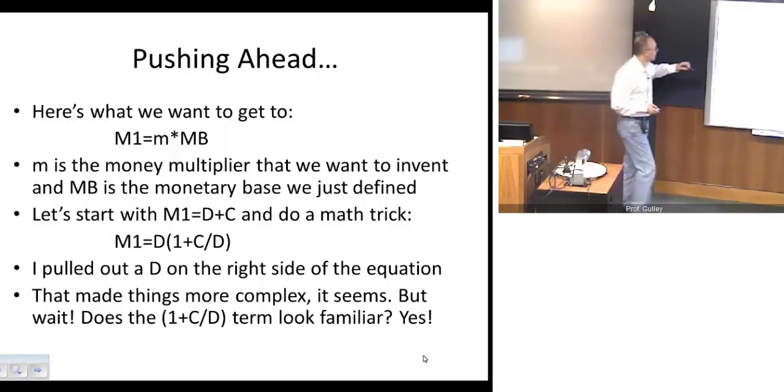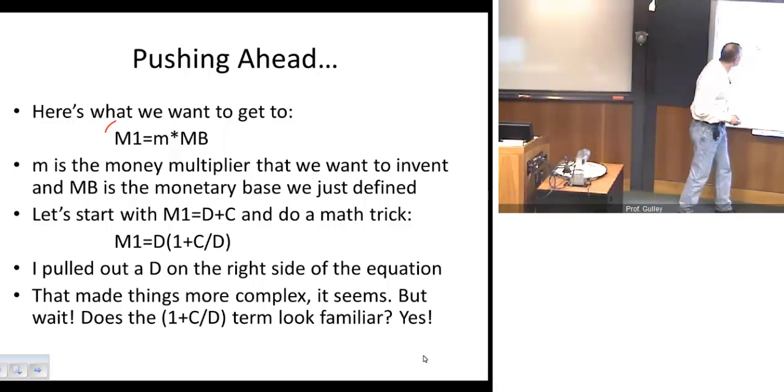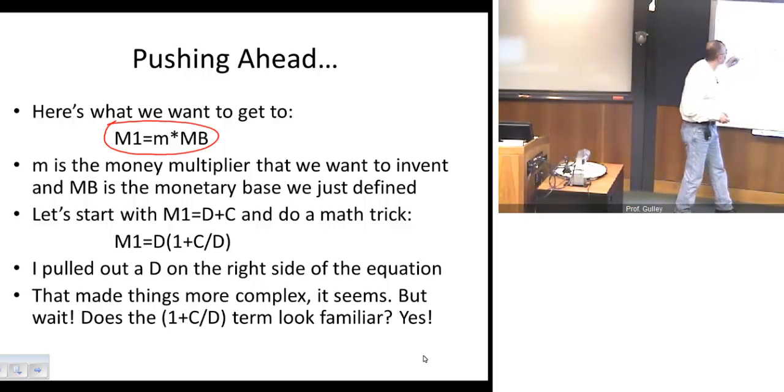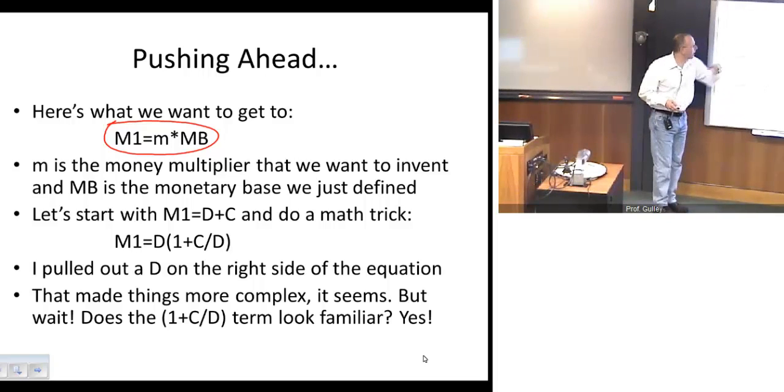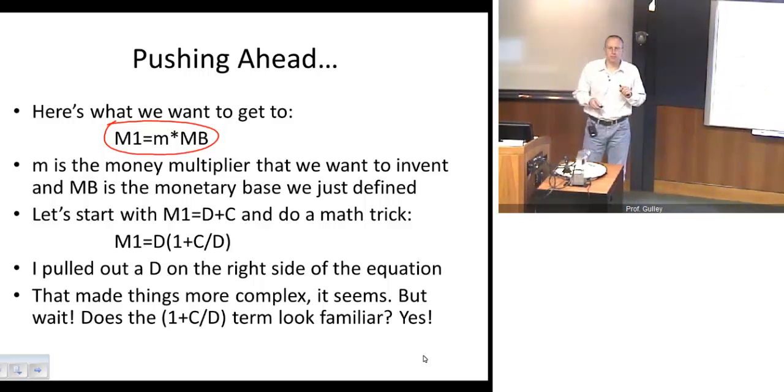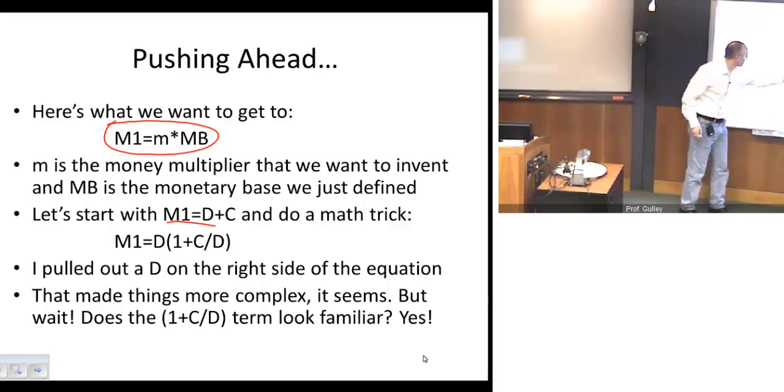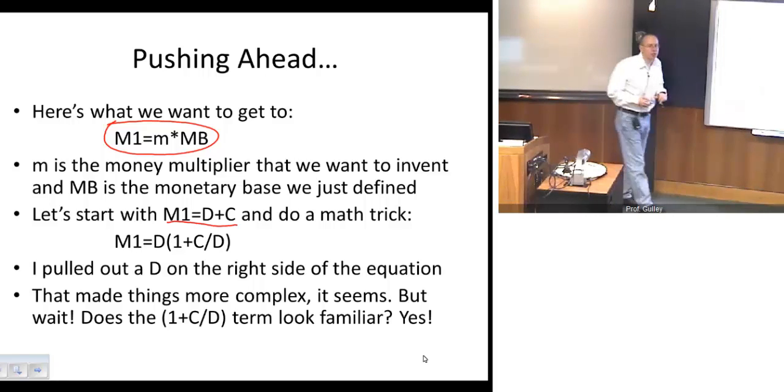And here's what we want to get to. We want to get to this important equation right here. So we want to link the monetary base over there on the right, reserves plus currency, to the total money supply as measured by M1. And we want to do that through that little m, that money multiplier that we want to invent, that we want to derive, that we want to somehow come up with. So how do we start to do this? Well, let's start with our definition of M1, deposits plus currency in circulation.